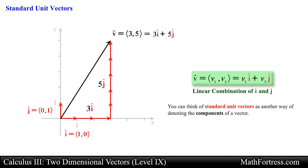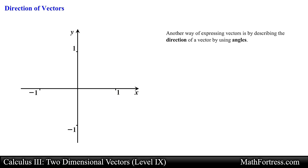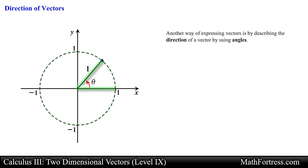Now let's take a look at another way of describing vectors in a plane: expressing the direction of a vector using angles. Recall from trigonometry that a unit circle was used to define trigonometric functions; the unit circle has a radius equal to 1. We defined an angle theta in standard position as an angle starting on the positive x-axis and rotating counterclockwise, intersecting a point (x, y) on the unit circle. Using right angle trigonometry, the x-coordinate is expressed as cosine of theta and the y-coordinate as sine of theta.